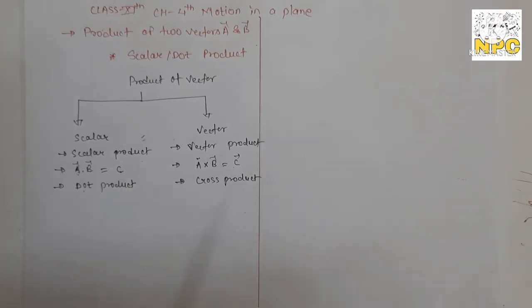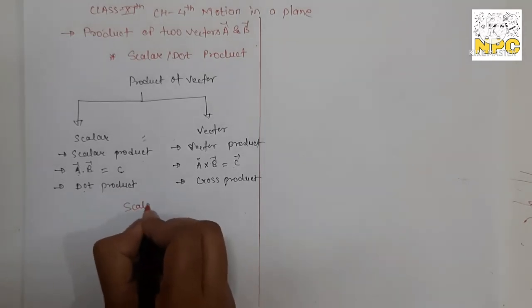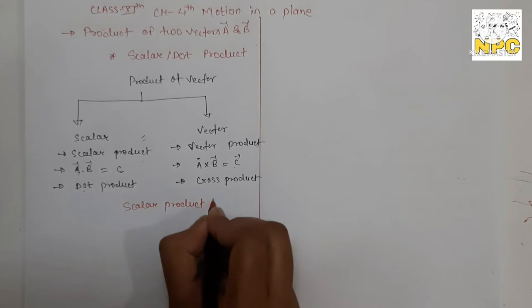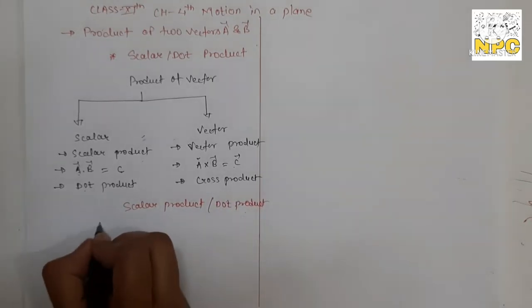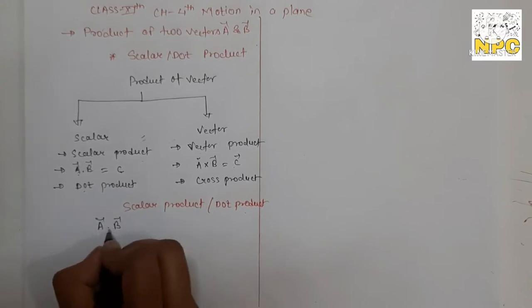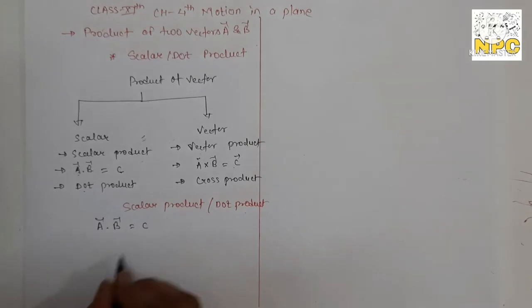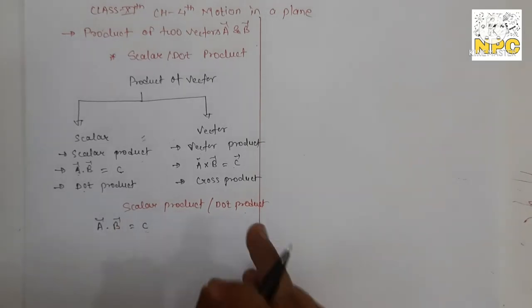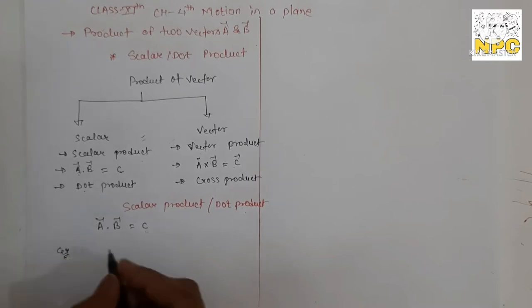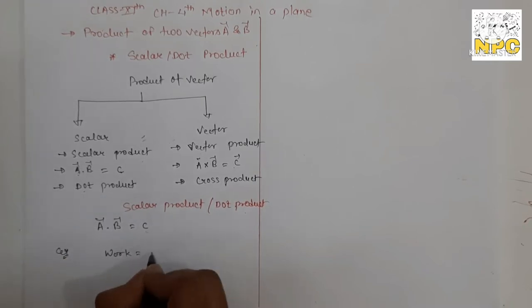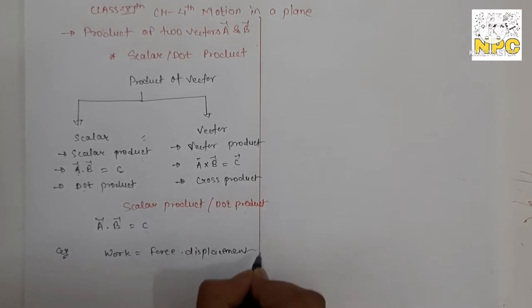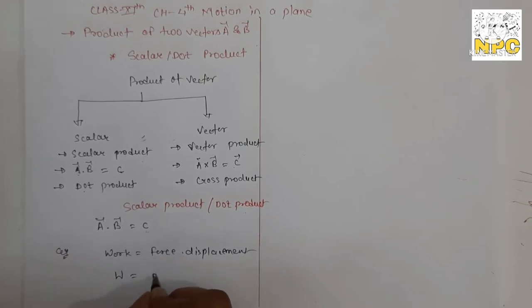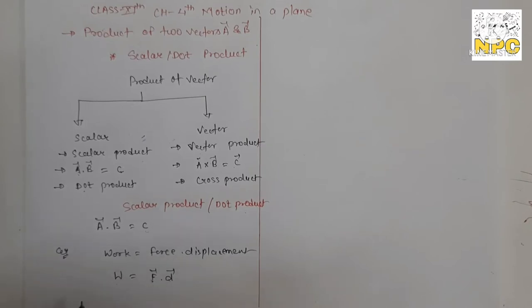Let's talk about the scalar product, also called the dot product. We consider two vectors a and b, and their dot product gives a resultant scalar quantity. A good example is work: work equals force into displacement. Force is a vector quantity and displacement is also a vector quantity, so multiplying two vectors gives work, which is a scalar quantity.